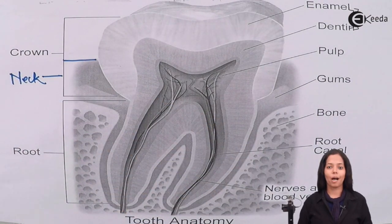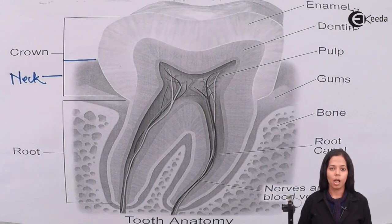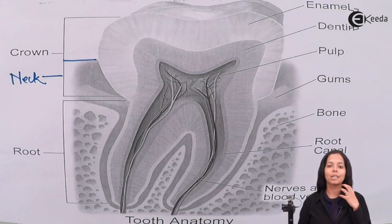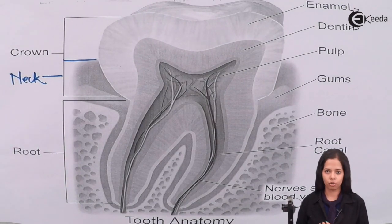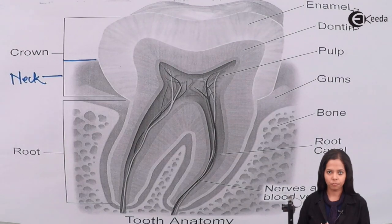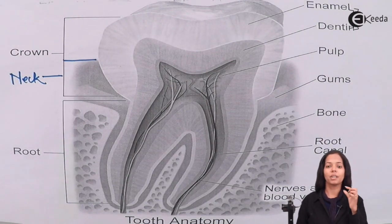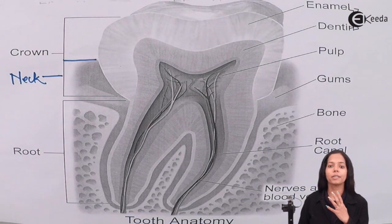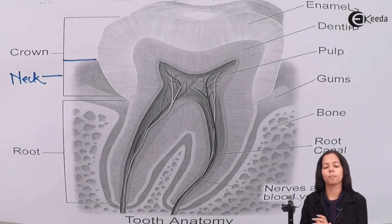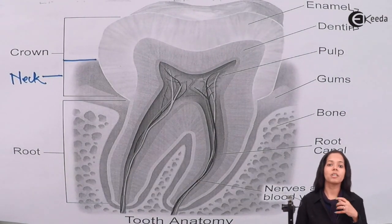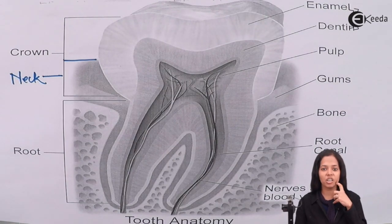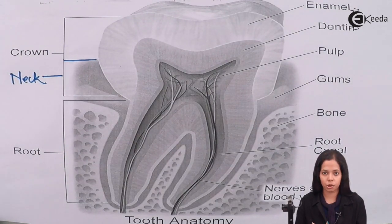The part of the teeth which you can see above the gum is called the crown region. The part of the teeth which is present in the gum region is called the neck region, and the part of the teeth which is inserted inside the jaw bone is called the root region.